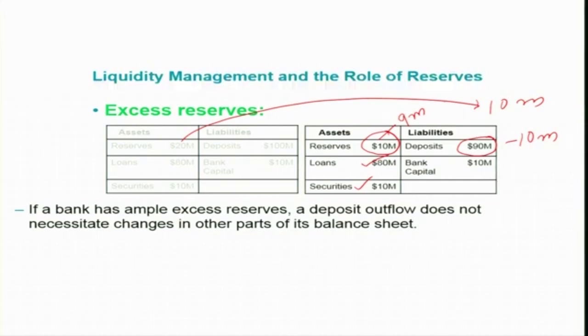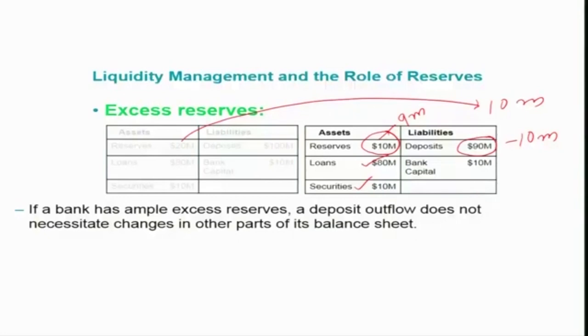This is one scenario: if a bank has ample excess reserve, a deposit outflow does not necessitate changes in other parts of its balance sheet. They can easily honor the withdrawal request from depositors. However, keeping money in excess reserve has an opportunity cost — foregoing income from investing those funds — but for now we focus on the fact that excess reserve acts as a cushion against sudden deposit outflow.